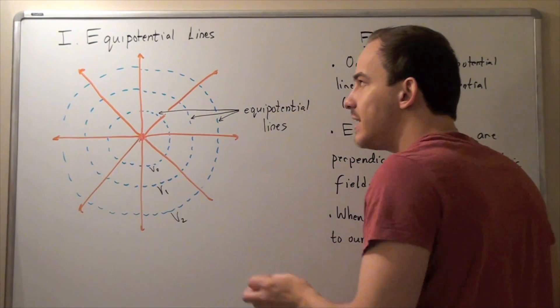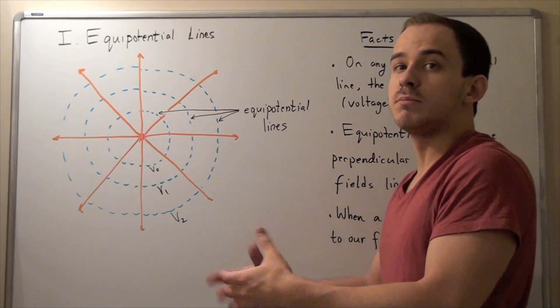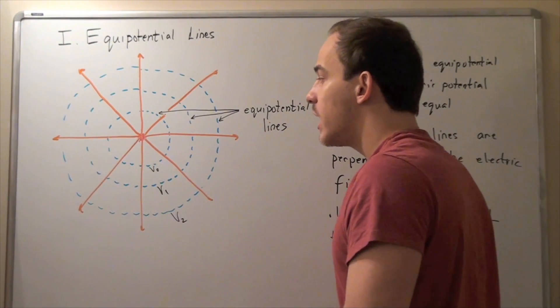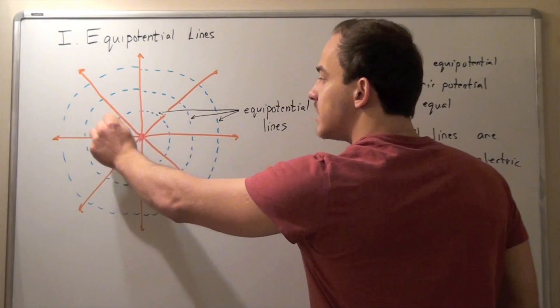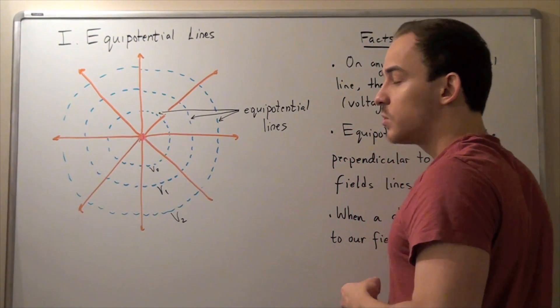And that's because on any equal potential line, my potential, my electrical potential or voltage is equal. It's the same. And therefore, a charge that's moving on this path, on this equal potential line, will experience no change in voltage.